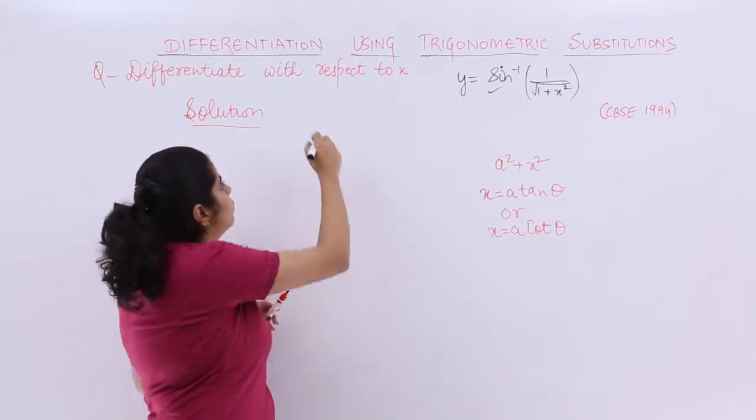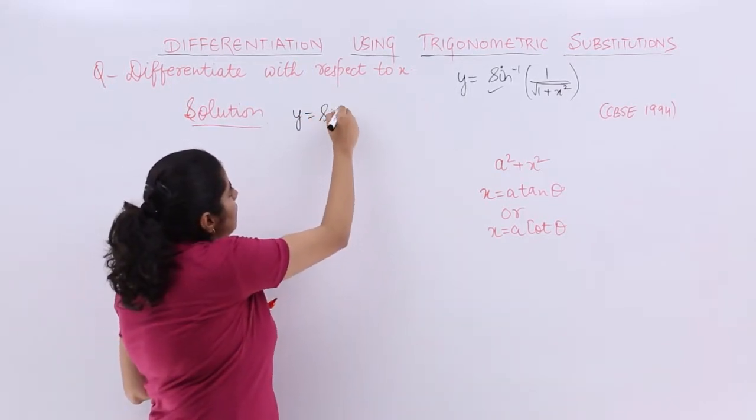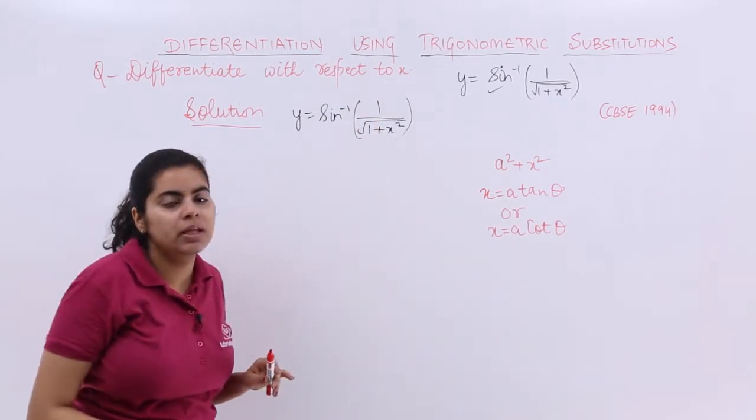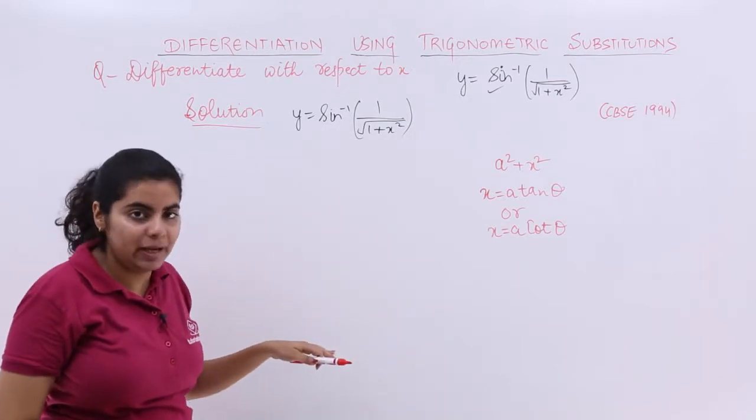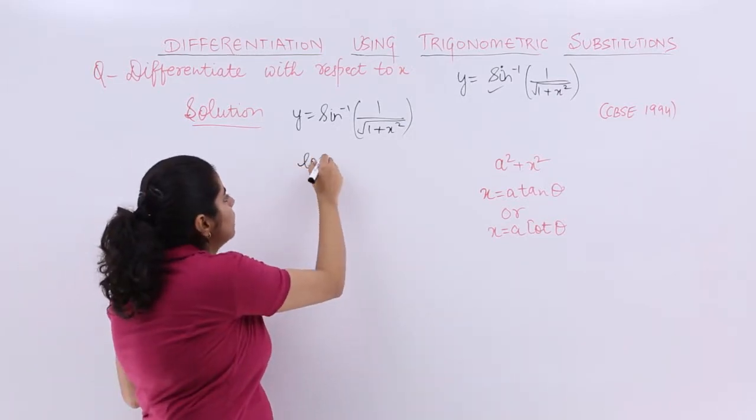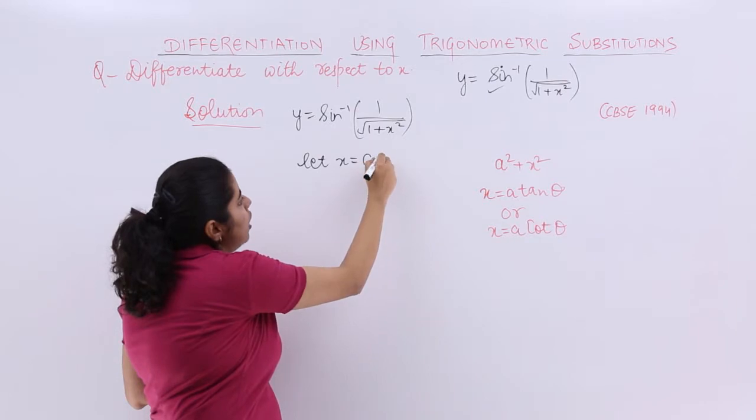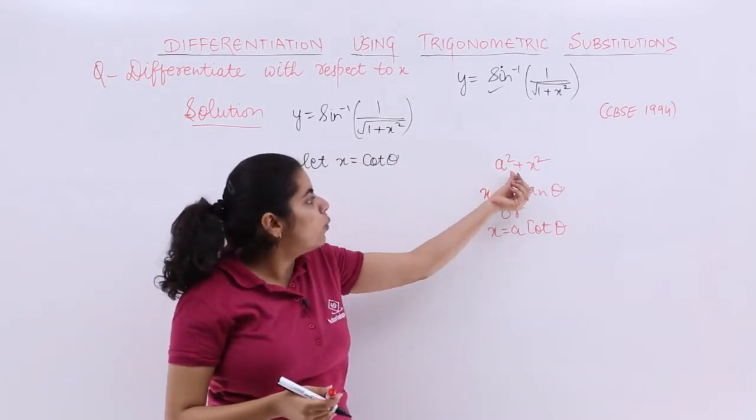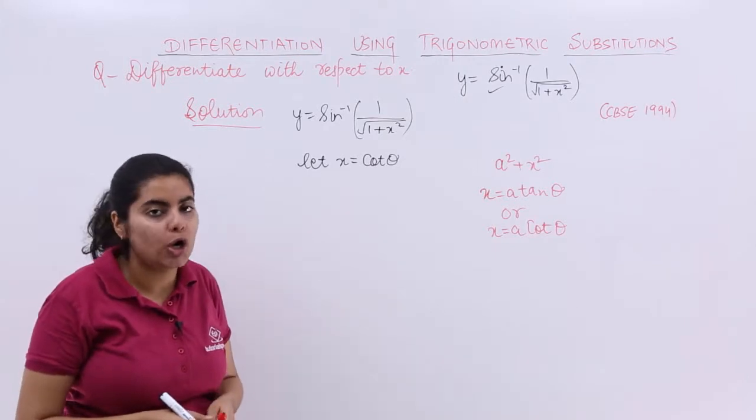We have y = sin⁻¹(1/√(1+x²)). Let's substitute x = cot θ, because when a = 1, we have the form 1 + x².